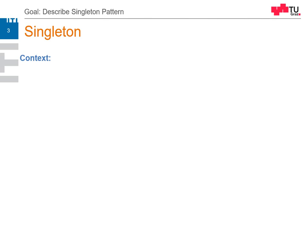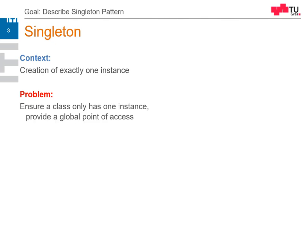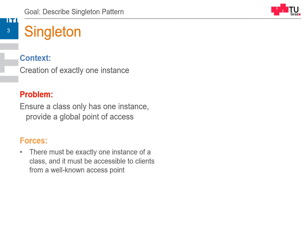So what is the context? We want to create only one instance — we want to ensure that in the whole application only one instance of an object is alive at the same time. The forces are: there must be exactly one instance, and it must be accessible by all clients from a well-known access point, so they can somehow get access to this instance.